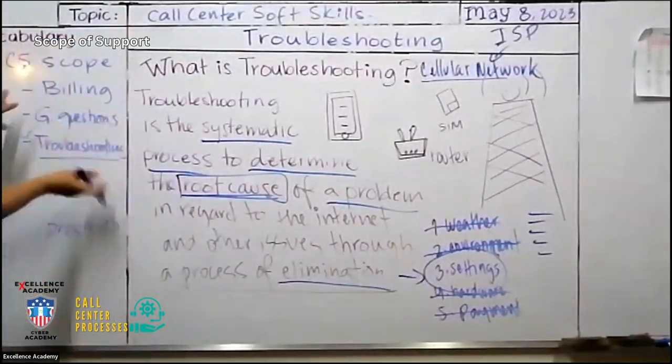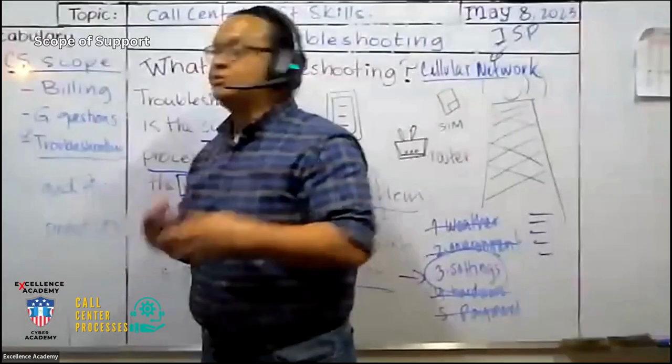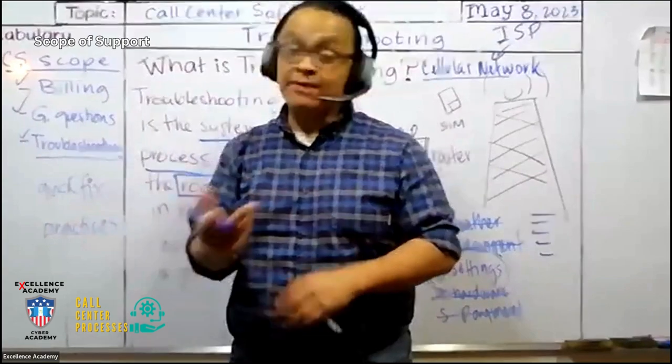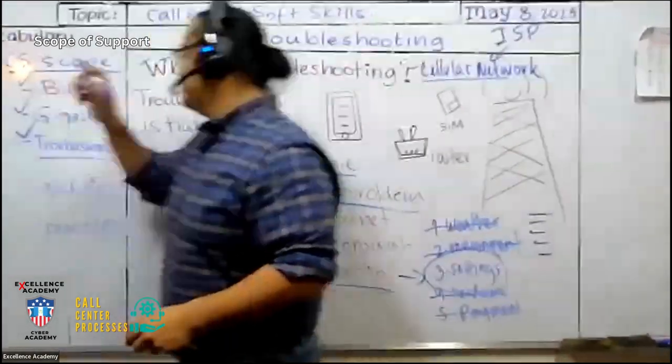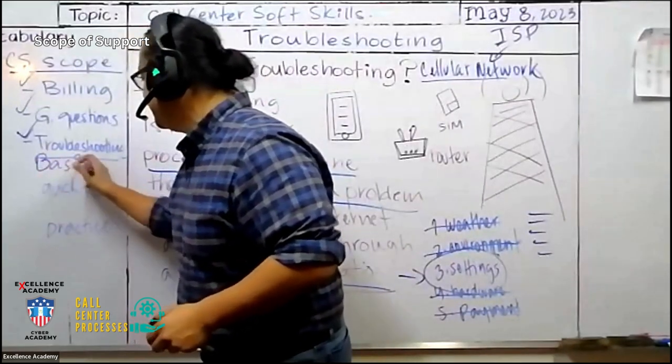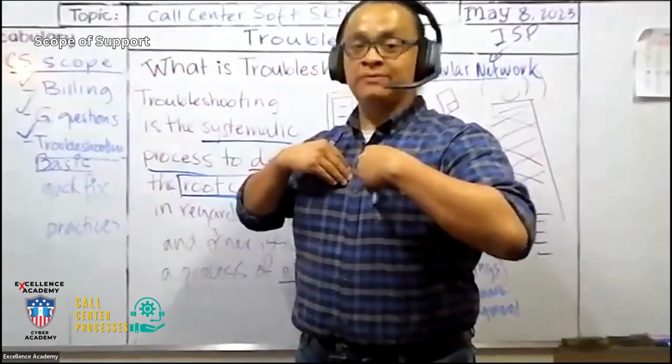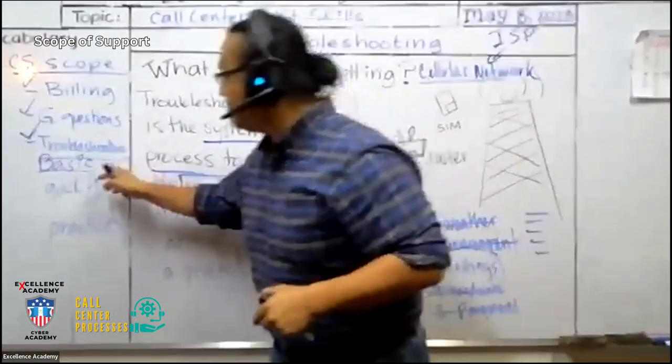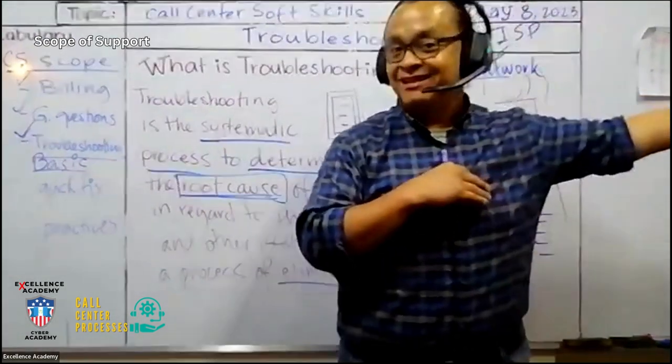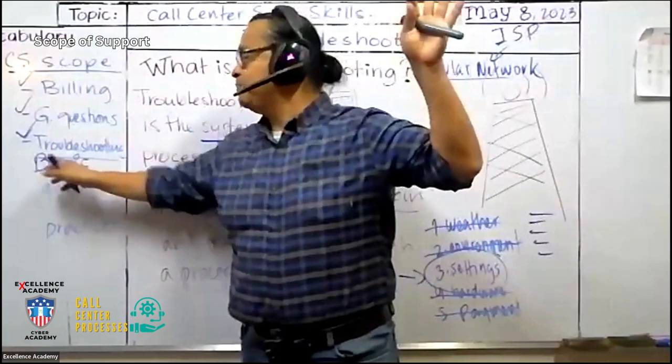Now, troubleshooting is part of the scope. A scope are the things that you are in charge of or responsible, especially in customer service. Customer service deals with billing questions. How much is my bill and all that stuff. General questions like, when did I make my last payment or what happens if this happens. And troubleshooting. In customer service, we do what they say we do is basic. We do very basic troubleshooting. Before the customer is transferred to tech support, us customer service agents are the first line of defense. We have to do basic troubleshooting before we transfer our customer to the experts. To the guys that really know more than us about troubleshooting, about this stuff. But as CSRs, we have to conduct basic troubleshooting.